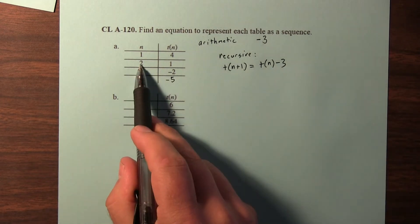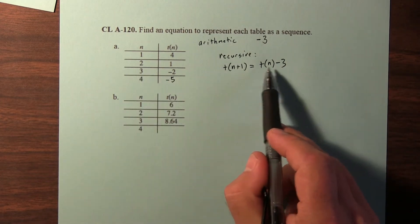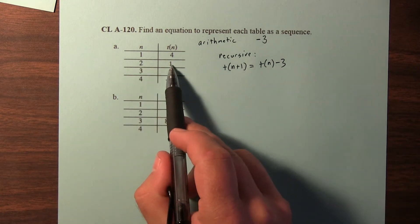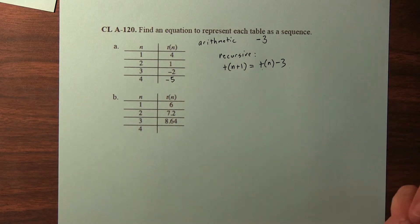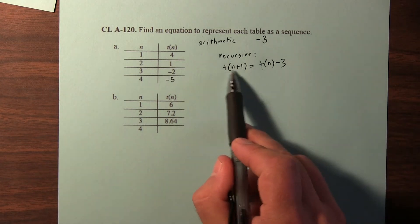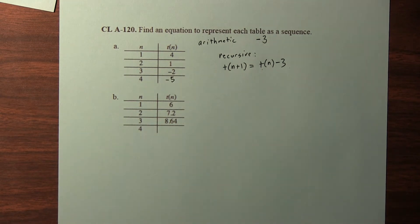So let's say we have the second term. If this said t of 2, the second term is 1, and 1 minus 3 is negative 2. So the third term, this would say t of 3, is negative 2.